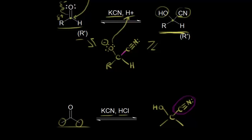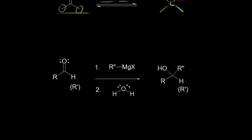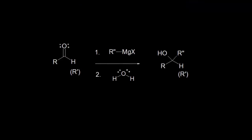Let's look at another reaction involving a carbon nucleophile: organometallics. Specifically, we have a Grignard reagent — an alkyl group bonded to magnesium and a halogen, an organomagnesium compound. We could equally use an organolithium compound, where R prime is bonded to lithium. These are both organometallics, and the key is the electronegativity difference between the carbon bonded to magnesium or lithium.